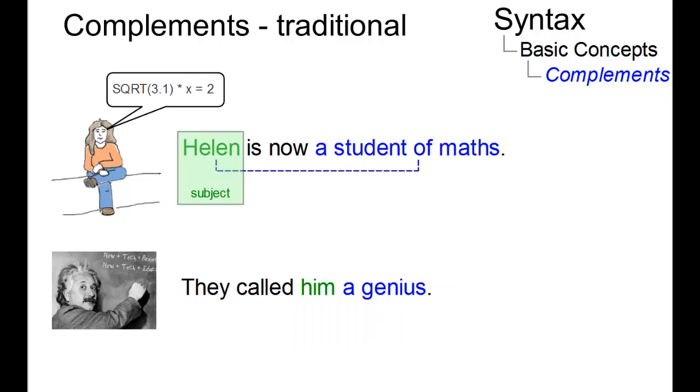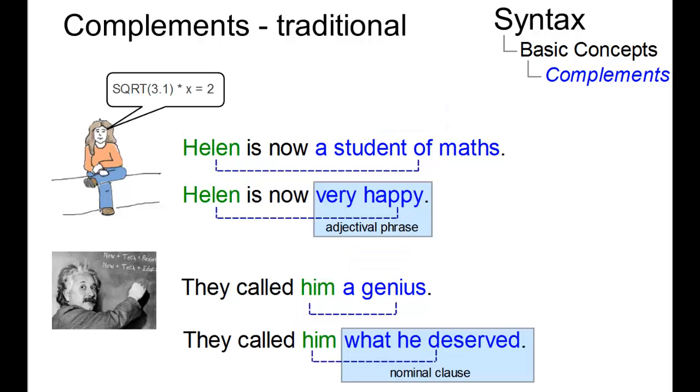So the subject complement relates to the subject, and the object complement relates to the direct object. In our examples, the complement is formally realized by a noun phrase. Other options are adjectival phrases or nominal clauses.